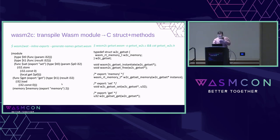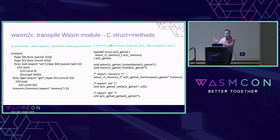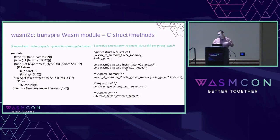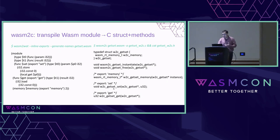WASM2C takes the same module and transpiles it into a C header file and a C implementation file. The header file exposes the interface of the compiled module: a structure representing the module's fields, and a mechanism to instantiate and free it — almost like a class in C++. The memory, setter, and getter are exported as public methods. This is what WASM2C creates.